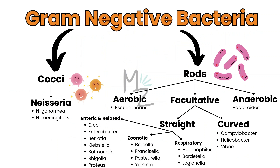Facultative rods are further subdivided into curved and straight. Curved ones are Campylobacter, Helicobacter, and Vibrio. Straight ones are subdivided into enteric and related, which include E. coli, Enterobacter, Serratia, Klebsiella, Salmonella, Shigella, and Proteus; zoonotic, which includes Brucella, Francisella, Pasteurella, and Yersinia; and respiratory, which includes Haemophilus, Bordetella, and Legionella.